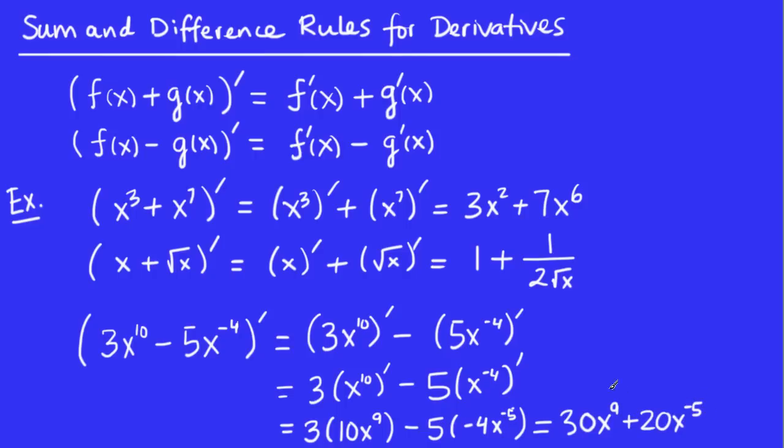Minus 5 times minus 4 is positive 20. We can leave it like that or maybe just do one more step and rewrite it with positive exponents only. This first term is fine. It has x to the 9 as positive. Plus, this is going to be 20 over x to the 5. And that would be our final answer there.